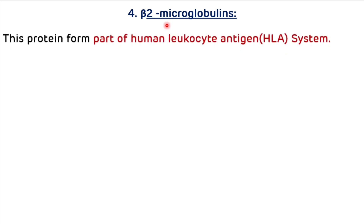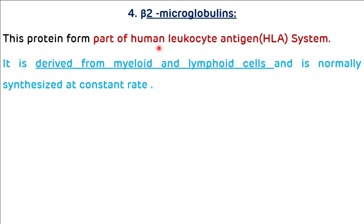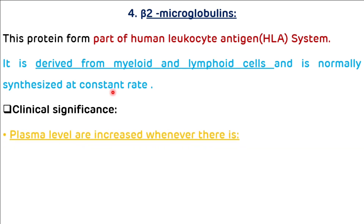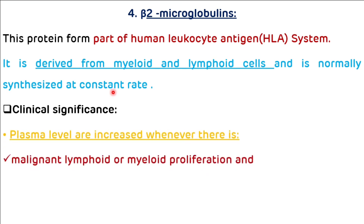The last beta globulin is beta-2-microglobulin. This protein forms part of the human leukocyte antigen (HLA) system. It is derived from myeloid and lymphoid cells and is normally synthesized at a constant rate. Clinically, plasma levels are increased whenever there is malignant lymphoid or myeloid proliferation and renal failure.